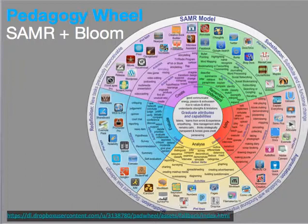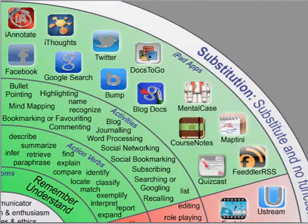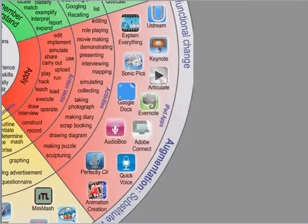Here is a pedagogical wheel that brings everything together, presenting activities and apps based on Bloom's Taxonomy and the SAMR model. At the substitution level, loosely aligned with remembering or understanding in Bloom's Taxonomy, the emphasis is on identifying, summarizing, and retrieving information — such as searching and Googling. At the augmentation level, loosely related to applying in Bloom's Taxonomy, the emphasis is to share and construct knowledge, with tools like Google Docs or Evernote being appropriate.